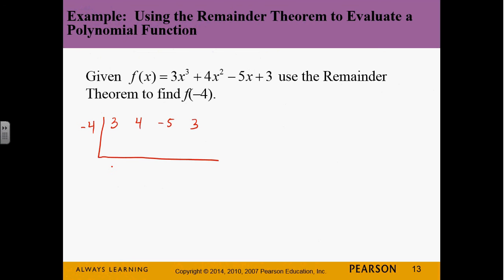So, we do bring down, multiply, negative 12, add, negative 8, multiply, 32, add, 27, multiply, negative 108, and then add, negative 105. So, that means f of negative 4 should be negative 105. So, if I plug negative 4 in as x, I should get negative 105. And we can test this.